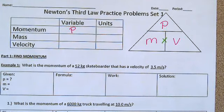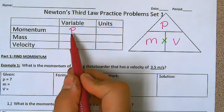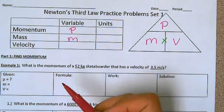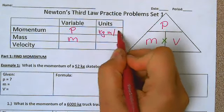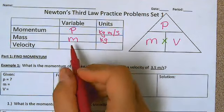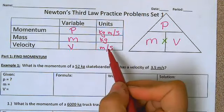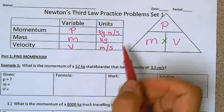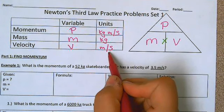Momentum is represented by a P because we already have M being used for mass — we don't want to get those two things confused, so we're using P for momentum. The units for momentum are kilograms meters per second. The mass is going to be in kilograms and the velocity V is in meters per second. If you have the mass in grams or pounds you have to convert it into kilograms, and the same for velocity — if it's in kilometers per hour or miles per hour you'll have to convert it to meters per second.